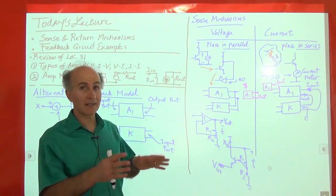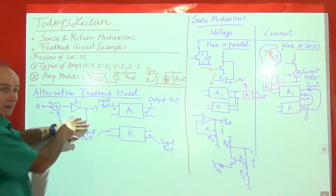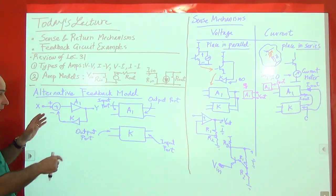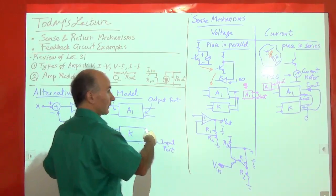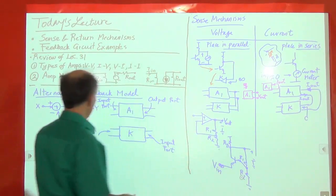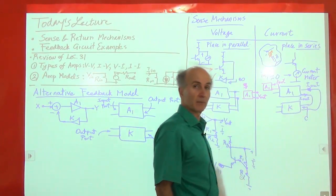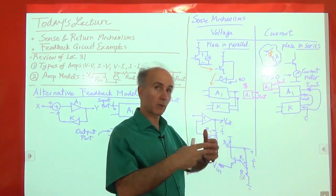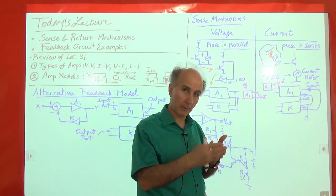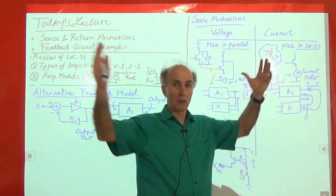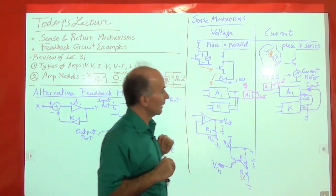These are the sense mechanisms regarding the output of a circuit. If you want to measure the voltage, connect the input port of K in parallel with the output port of A1. If you want to measure the current, place the input port of K in series with the output port. We are building our negative feedback systems step by step so that eventually every part of a large circuit is clear.